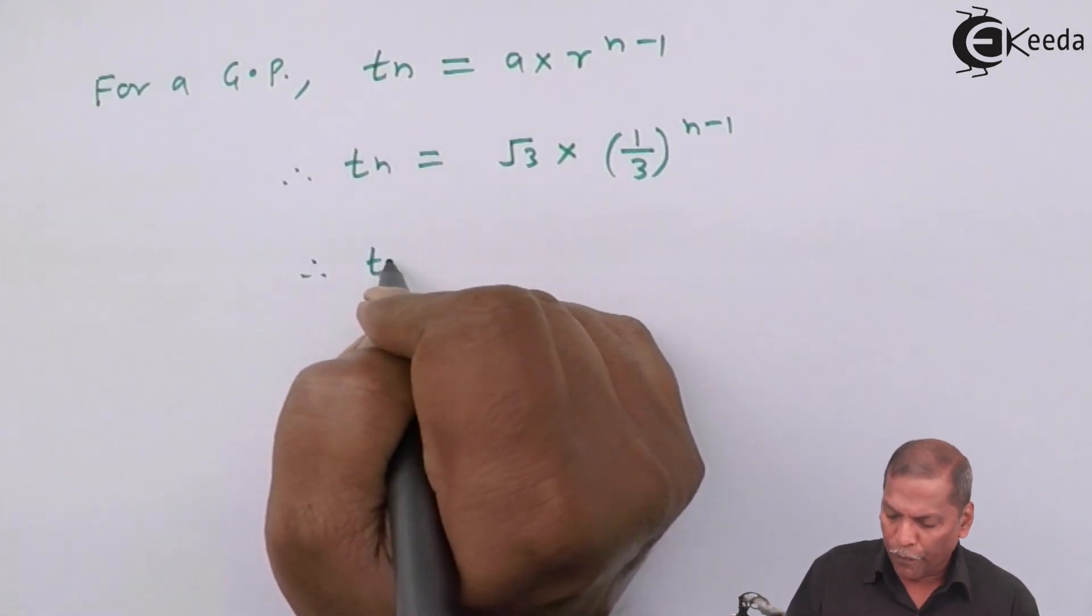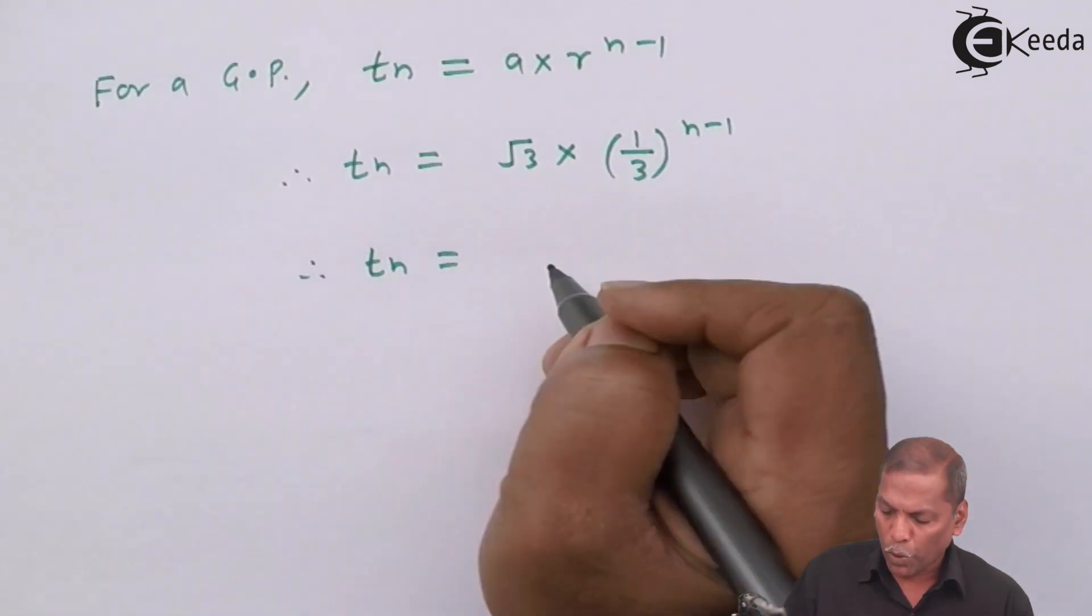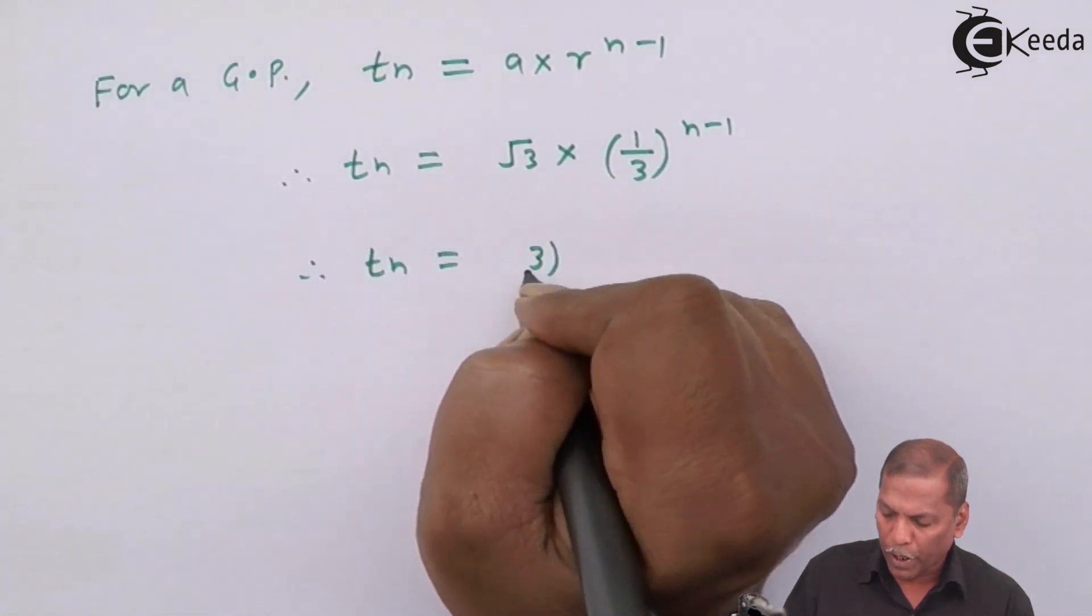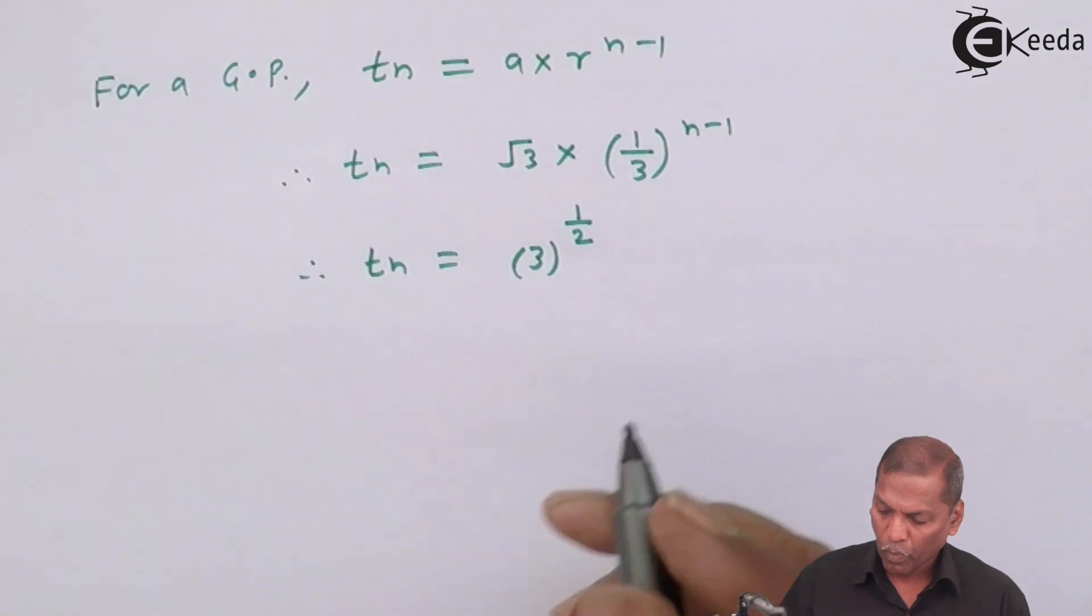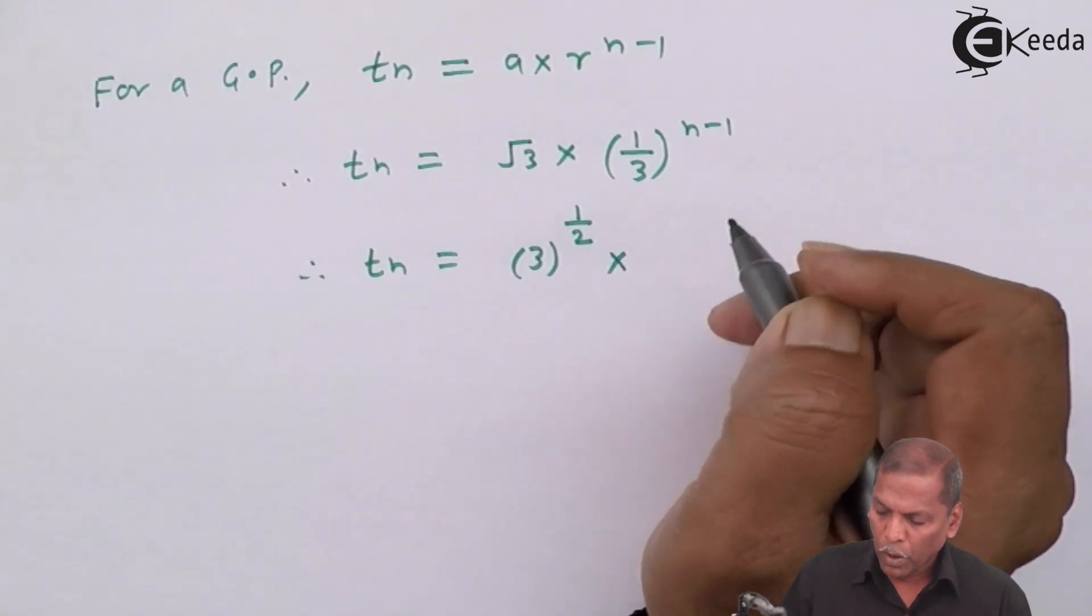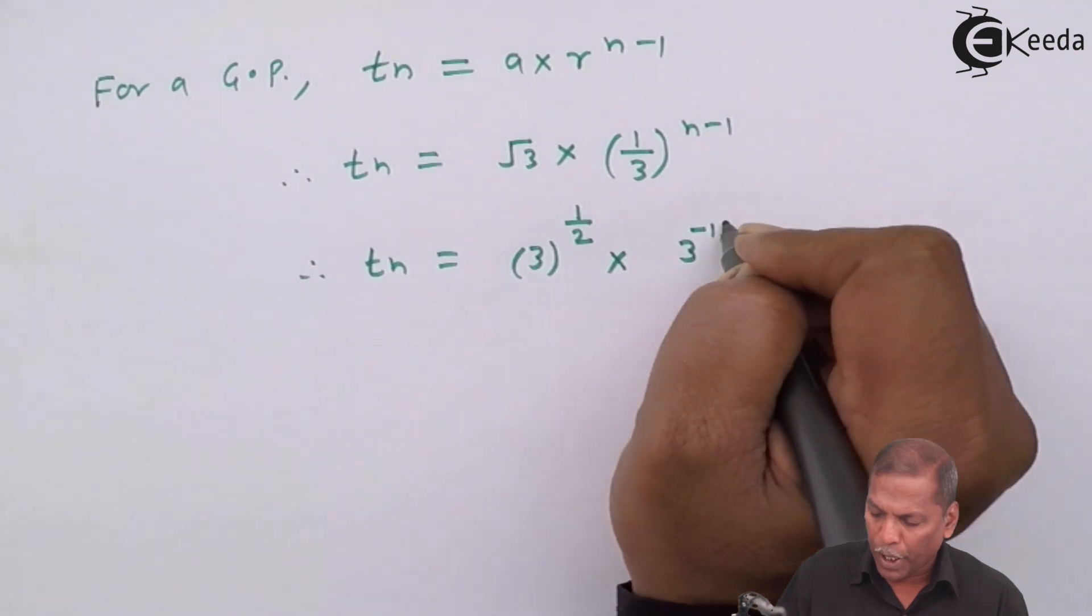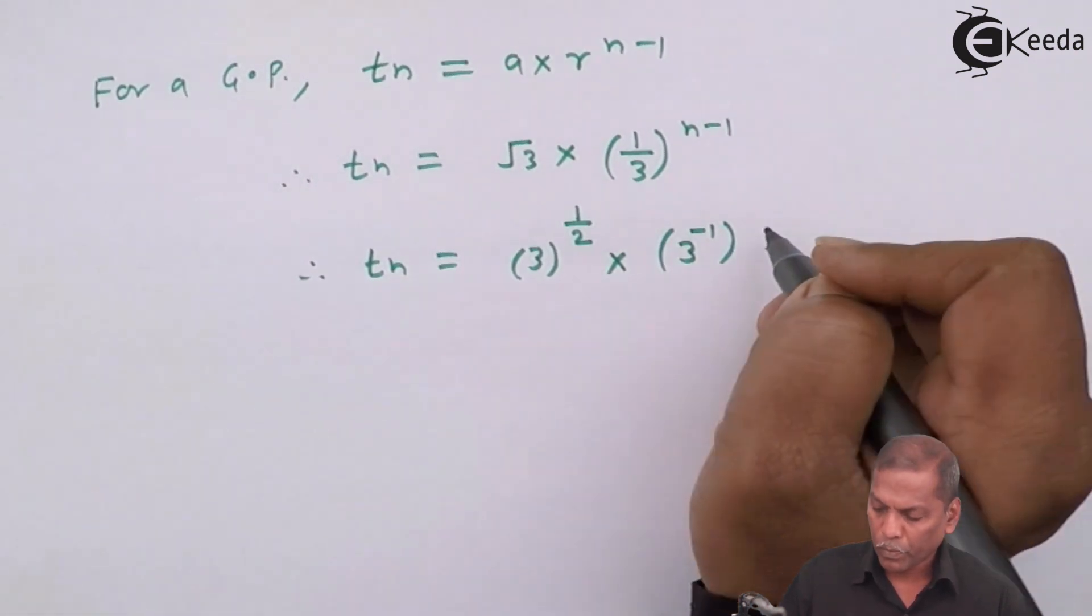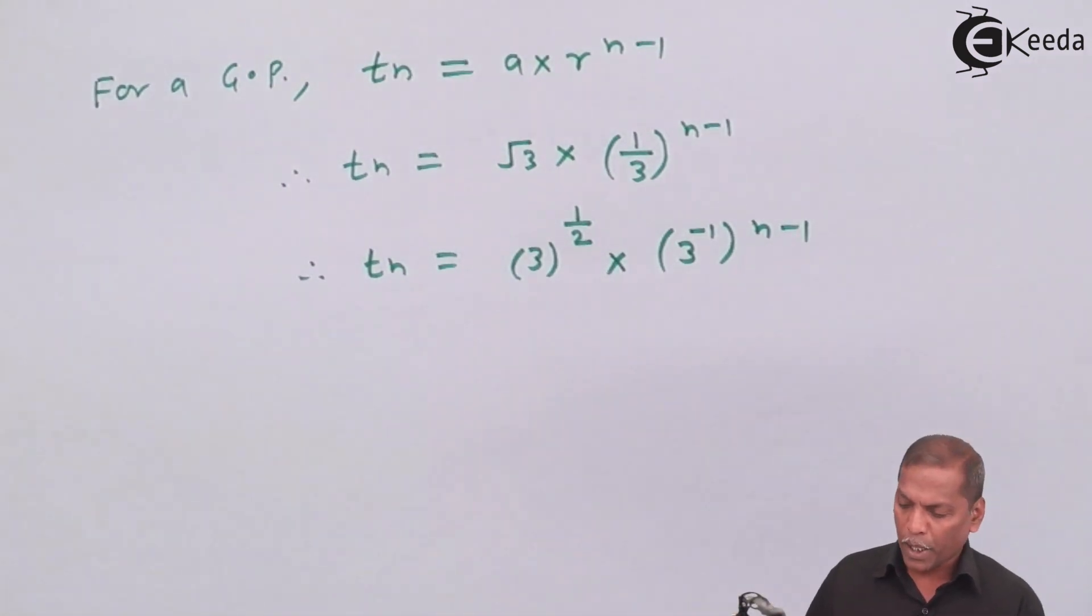On simplifying further, Tn equals, now root 3 can be written as 3 raised to 1 by 2, and 1 upon 3 can be written as 3 raised to minus 1, whole raised to n minus 1.